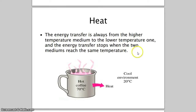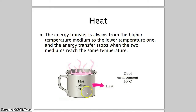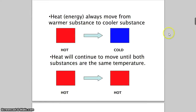For example, a hot coffee at 70°C will transfer heat to the cool environment. You can feel it getting hotter around the coffee. If the coffee is at 95°C, there's a lot more heat transfer to the environment due to the higher temperature. Heat will move from the warmer substance to the cooler substance, and heat transfer will keep continuing until both reach the same temperature.